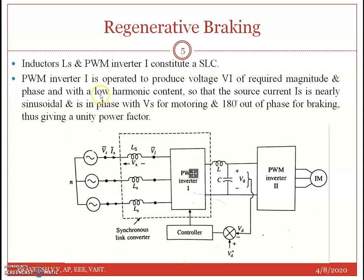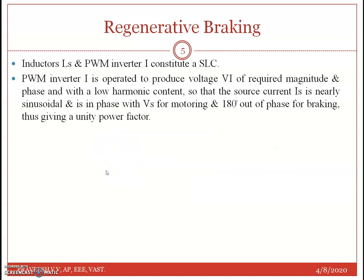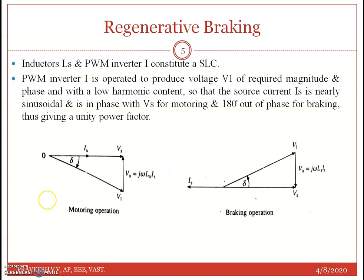In the synchronous link converter, PWM inverter 1 is operated to produce VI of required magnitude and phase with low harmonic content, so that the source current IS is nearly sinusoidal and is in phase with VS for motoring and 180 degrees out of phase for braking.